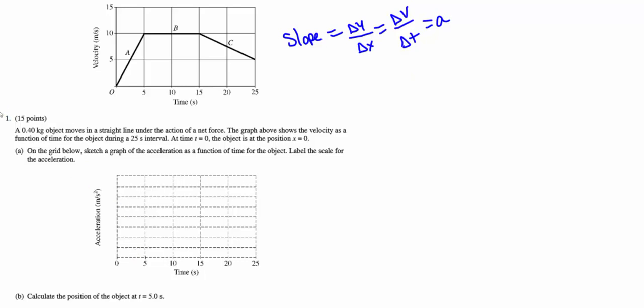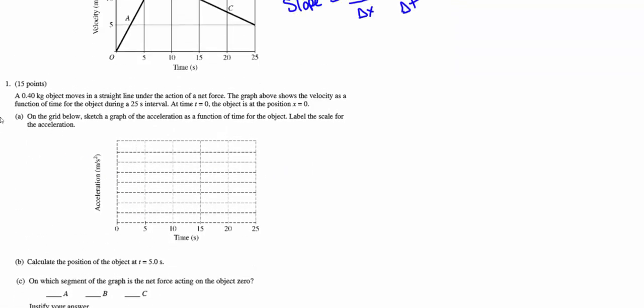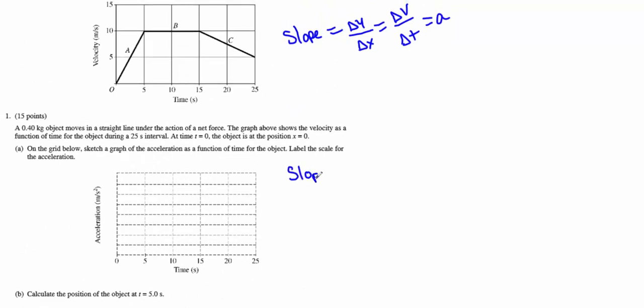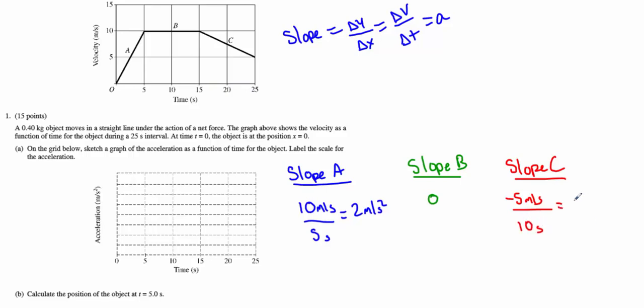To accurately plot our points, we're going to need to find the slope for each segment. The slope of segment A is the rise over run, so that'll be 10 meters per second over 5 seconds. We get a 2 meter per second squared slope, and that's the acceleration for segment A. In segment B, the slope is zero because there is no rise. Segment C, the rise is actually negative. It'll be negative 5 meters per second over 10 seconds, so we get a negative 0.5 meter per second squared slope.